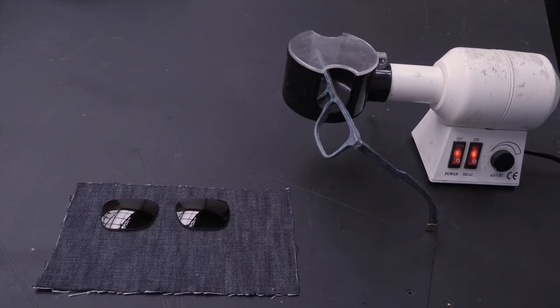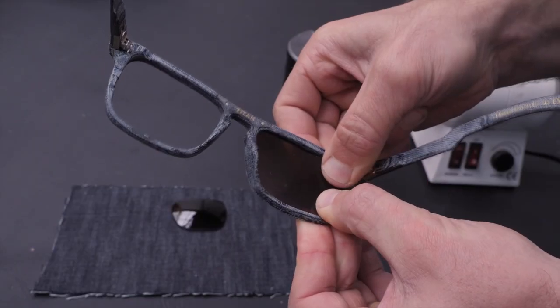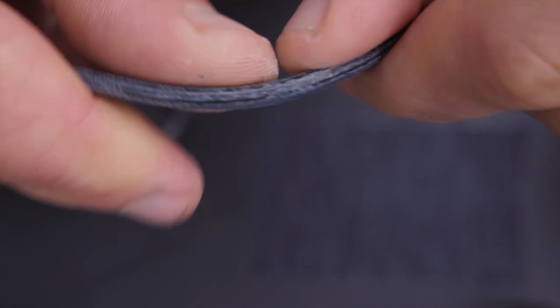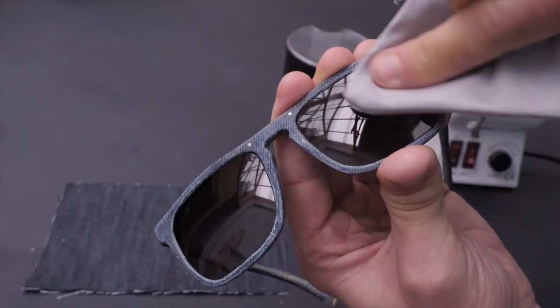And by heating the frames, the hardened denim material becomes malleable. And I can pop in the lenses, and I can apply the rest of the curves to the frame so that they're comfortable to wear. And at this point, the sunglasses are finished.